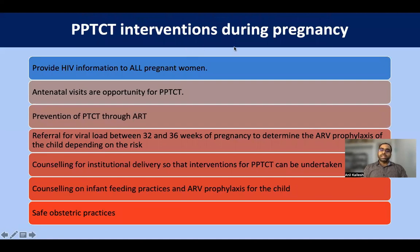Interventions during pregnancy include providing information about HIV to all pregnant women, starting ART in all HIV-positive pregnant women, and referring for viral load testing between 32–36 weeks to determine risk of parent-to-child transmission. Based on the risk category — high or low risk — the appropriate ARV prophylaxis is selected. Counseling for institutional delivery, infant feeding practices, ARV prophylaxis for the child, and safe obstetric practices such as avoiding forceps or vacuum deliveries are all emphasized.